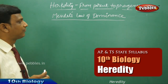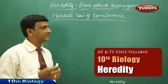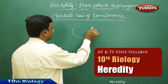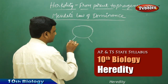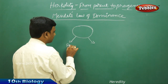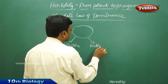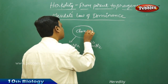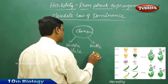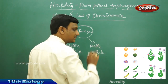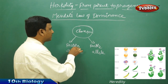Mendel's Law of Dominance — according to Mendel, every character is expressed by two factors. These factors are also called alleles, but always only one factor will be dominating.